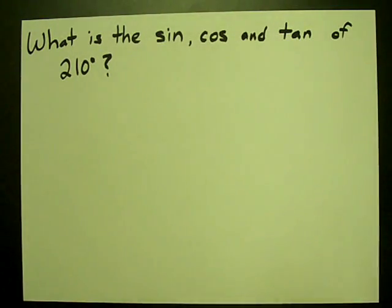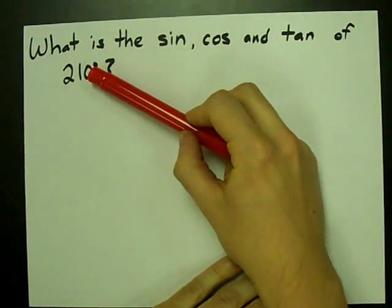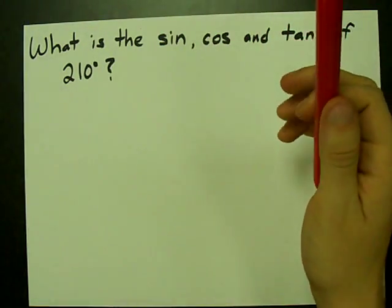How do you calculate the sine, cos, tan, any trig ratio for special angles, which are multiples of 30, 60, 45, things like that?